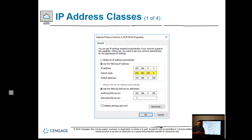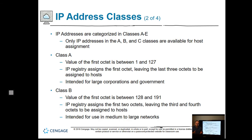IP address classes: you can see the IP address 192.168.0.4, which is a Class C address, with a Class C subnet mask of 255.255.255.0, along with the gateway and DNS server. IP addresses are categorized in classes A through E. Only IP addresses in the A, B, and C classes are available to us — you cannot assign a D or E class address because those are reserved. Class A is any address where the first octet starts with 1 and ends at 127, though 127 is typically the loopback address so we usually stop at 126.